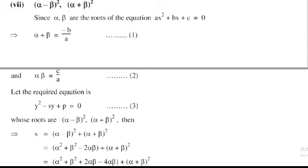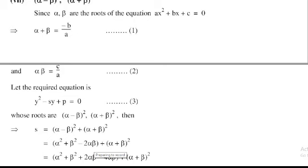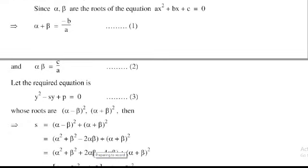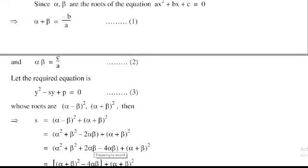S means sum. Sum S = (α − β)² + (α + β)². Opening the square: (α − β)² = α² + β² − 2αβ. By adding and subtracting 2αβ to form a perfect square: α² + β² + 2αβ − 2αβ − 2αβ = (α + β)² − 4αβ.